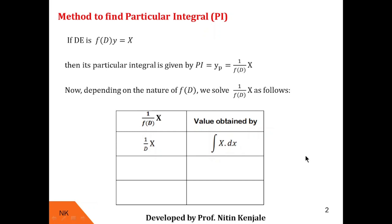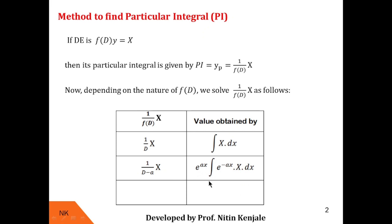Now let me show you the second case. If f(D) is of the type (D − a), where a is any constant, then the value of 1/(D − a)·X is given by e^(ax) times the integral of e^(−ax)·X dx. Similarly, if f(D) is of the type (D + a), then the value of 1/(D + a)·X is given by e^(−ax) times the integral of e^(ax)·X dx.